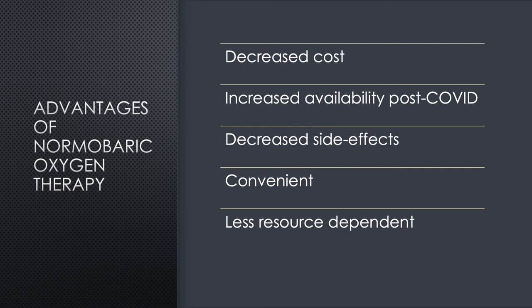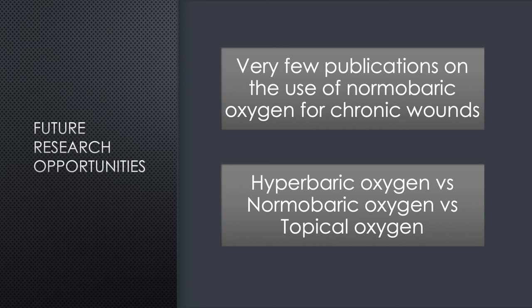The obvious advantages of normobaric oxygen therapy, especially when compared with hyperbaric oxygen therapy, include significantly decreased cost, a significant increase in available oxygen concentrators due to the COVID-19 pandemic, fewer side effects and risks, the convenience of home treatment, and less dependence on other expensive resources. I was surprised by the lack of evidence to support normobaric oxygen therapy in patients with acute or chronic wounds — in my opinion, it is a definite research opportunity. Normobaric oxygen therapy might be compared with topical oxygen therapy and even hyperbaric oxygen therapy.